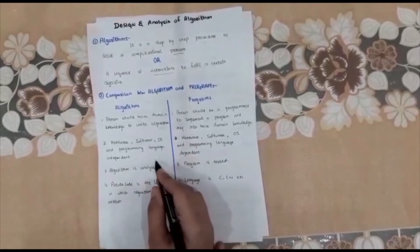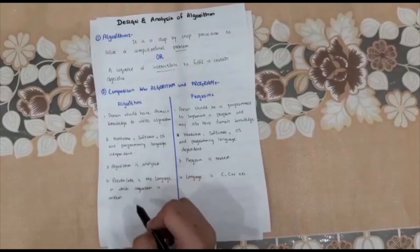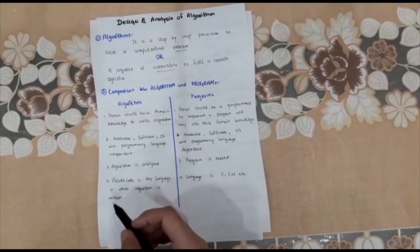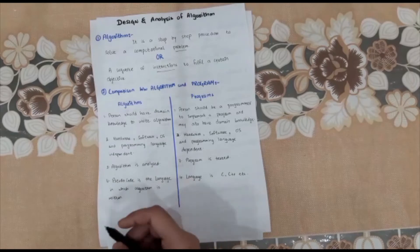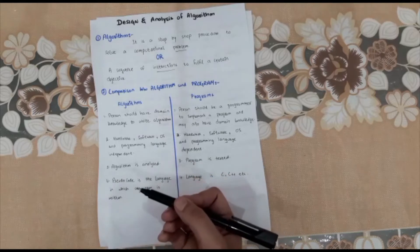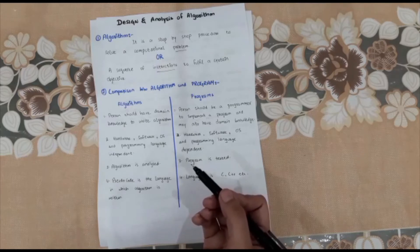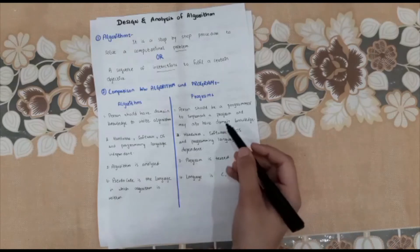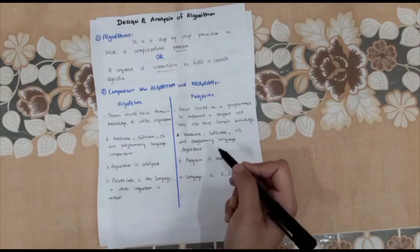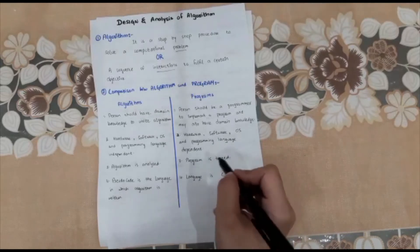The next point of comparison: an algorithm is hardware, software, operating system, and programming language independent. Because an algorithm is not written in a programming language — it is written in pseudocode, which we will discuss later. A program, on the other hand, is dependent on all these factors — hardware, software, operating system, and programming language.